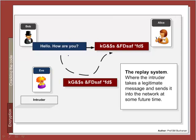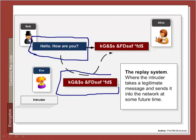Another method Eve might use is the replay attack. Bob sends a message, and Eve could then send the same message back to Alice exactly as it was. This might not seem a great problem, but if this were a bank transfer — money being sent, and the bank replying with an OK or reject message — it might be possible for Eve to replay one of those messages back to Bob to pretend to be the bank.